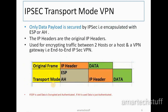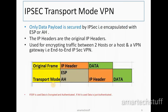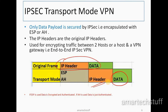In transport mode there is a slight difference from tunnel mode. In tunnel mode the original IP packet is encapsulated with AH or ESP plus an additional new IP header. In transport mode that additional IP header is not added — only the data payload is encapsulated with ESP or AH. The original IP headers remain; no extra IP header is added as in tunnel mode. Transport mode is used for encrypted traffic between two hosts or a host and VPN gateway — end-to-end IPSec VPN.